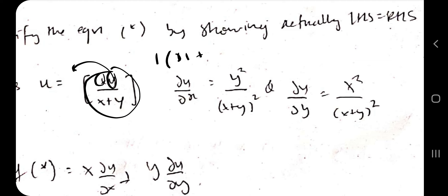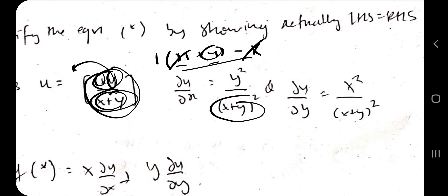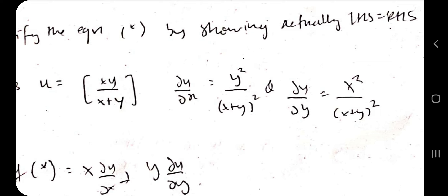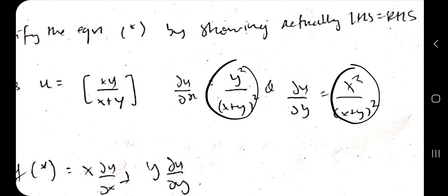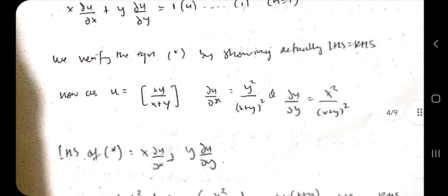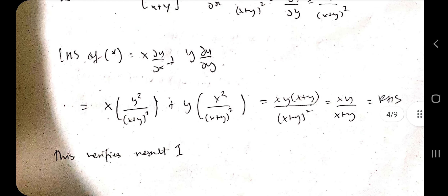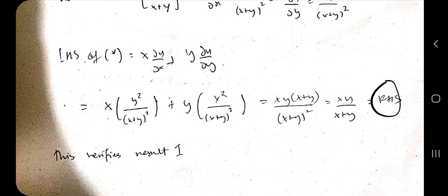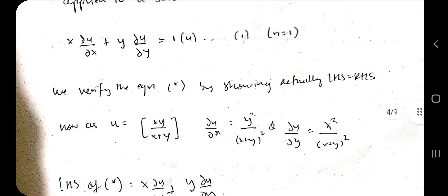Continuing the differentiation: the numerator simplifies to (x+y)·y minus x·y = y², so ∂u/∂x = y²/(x+y)². Similarly, for ∂u/∂y keeping x constant, we get x²/(x+y)². Substituting both into the formula x·(∂u/∂x) + y·(∂u/∂y) and simplifying, the answer comes out as xy/(x+y), which equals u. Since LHS = RHS, the result is verified.